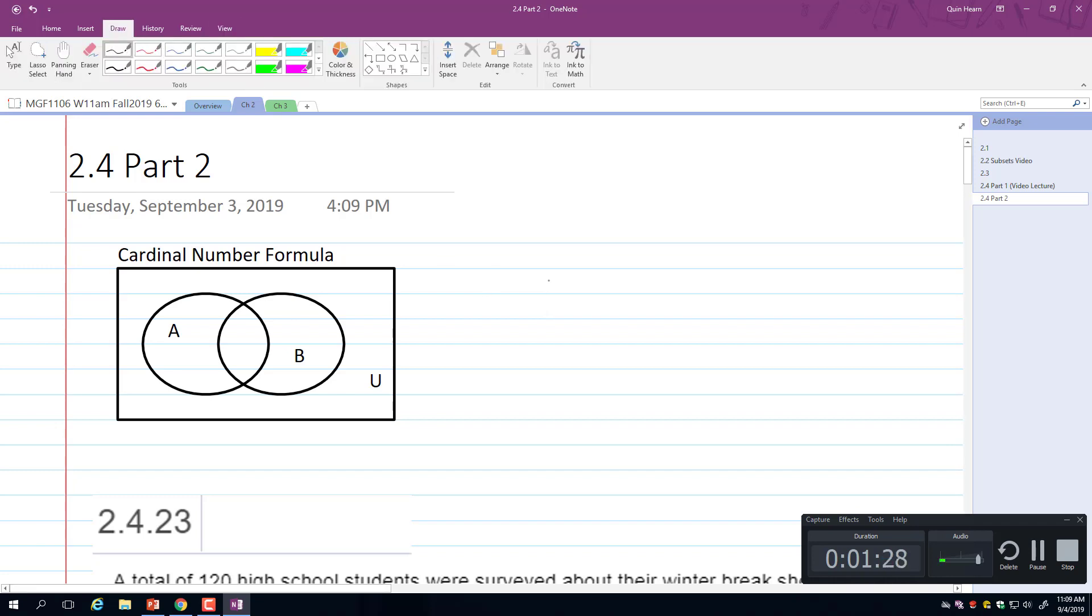The cardinal number formula says that if you want to find the number of elements in the union of A and B, remember union means unite into one big happy family, so we're putting all the elements together. If you want to find the number of elements in A union B, it's not enough to just know the number in A and the number in B.